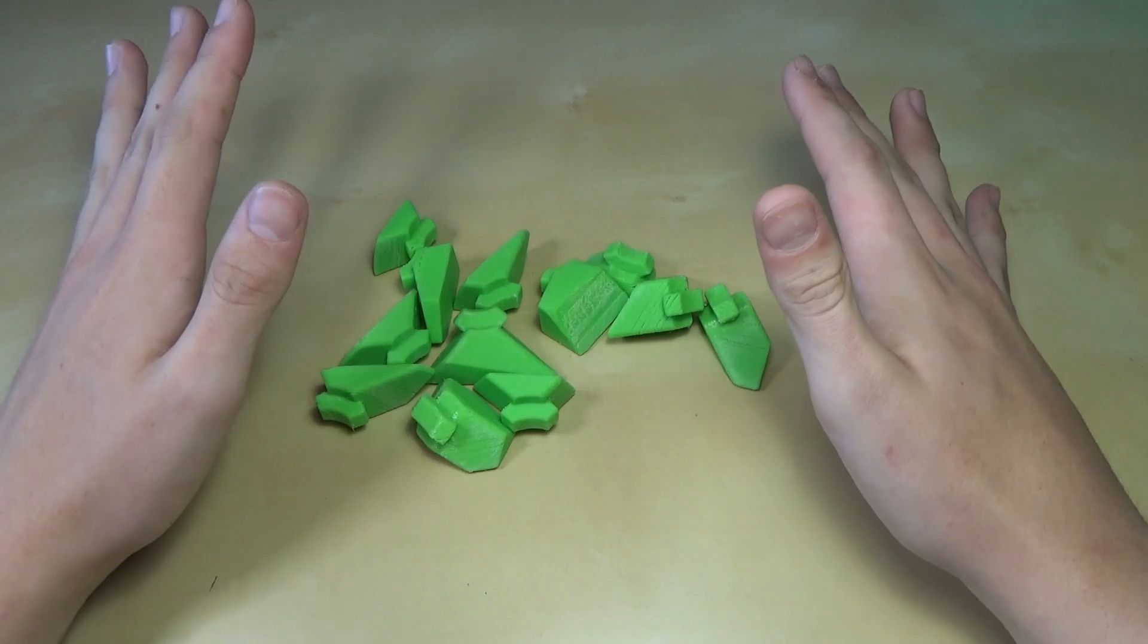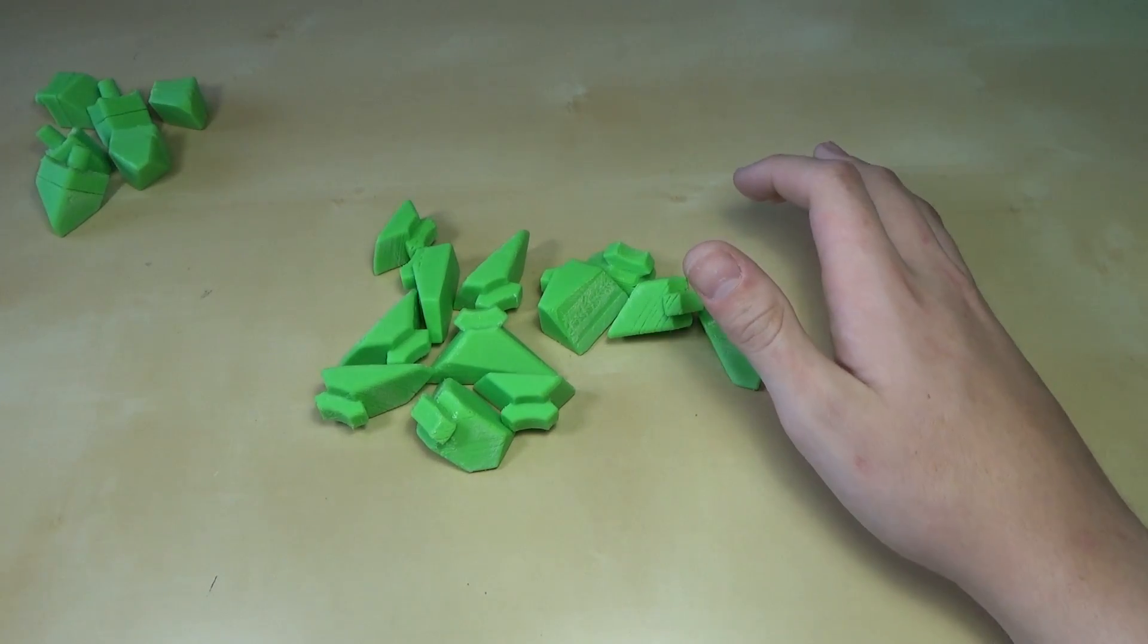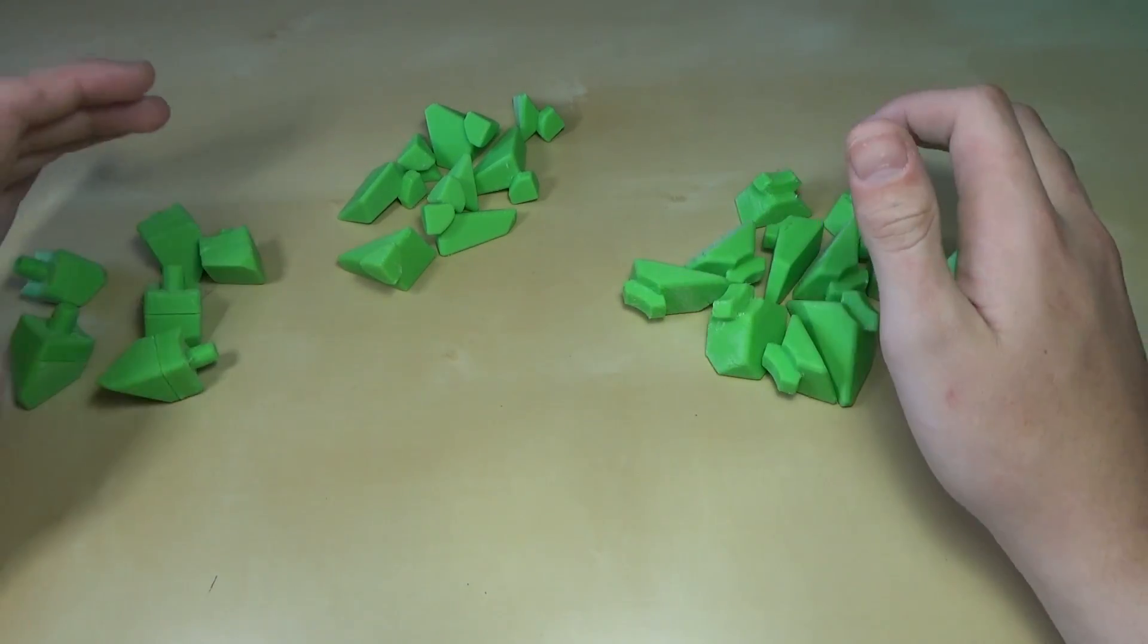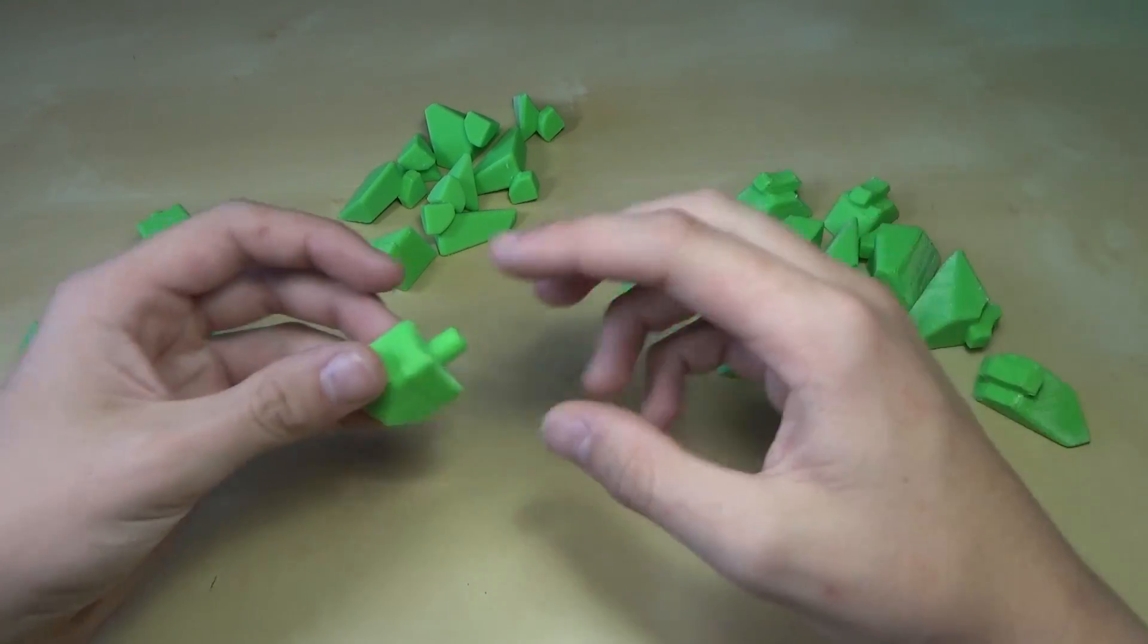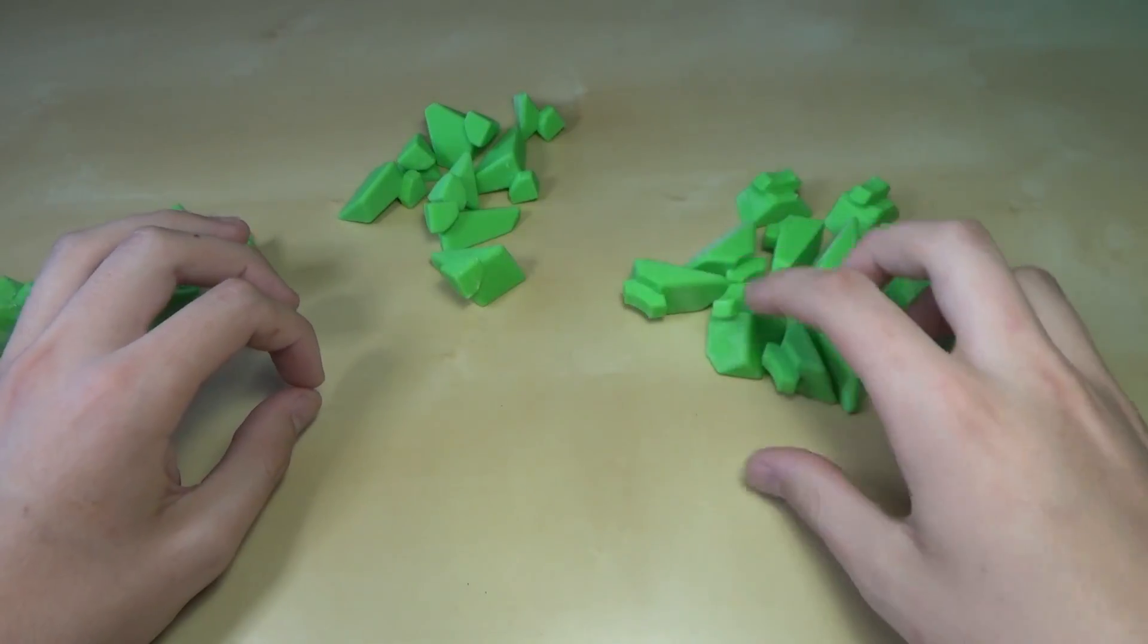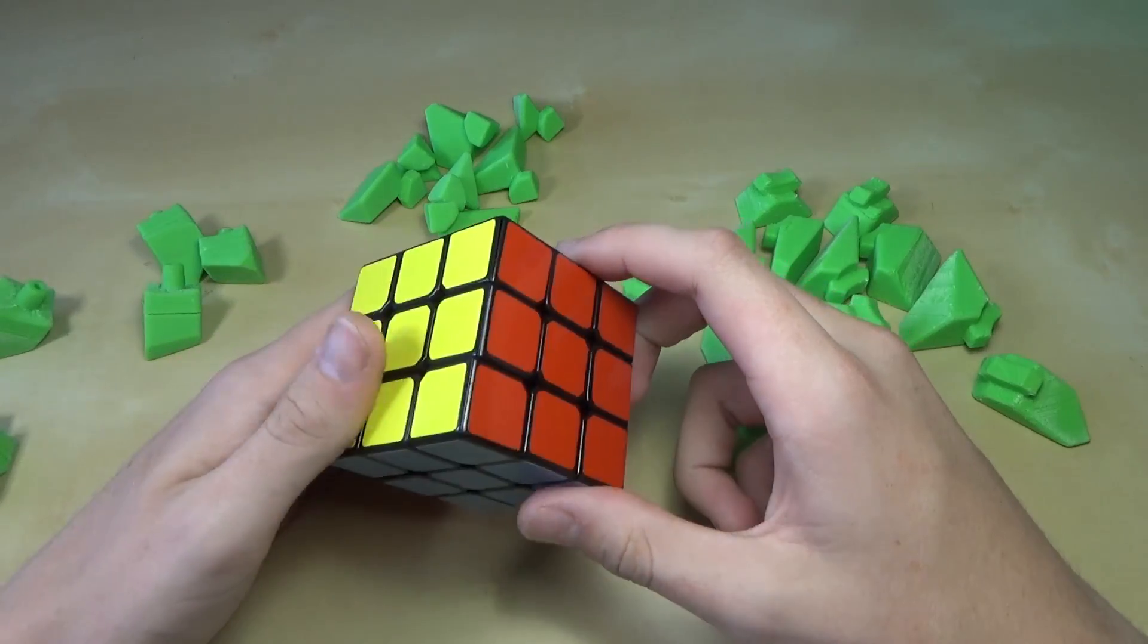So you may be wondering how I'm going to be making a ghost cube. The way I'm doing that is I have a bunch of parts that are actually 3D printed. I 3D printed them myself. We have all the center pieces here with the caps, we have a bunch of corners, we have edges, and the hardware - the screws, springs, and core.